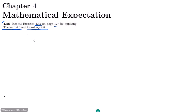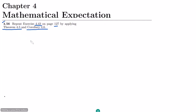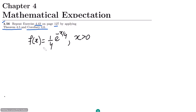In that question, what was given — let me write it here. The function f(x) is equal to 1/4 times e^(−x/4) for x greater than 0, and it is 0 elsewhere.